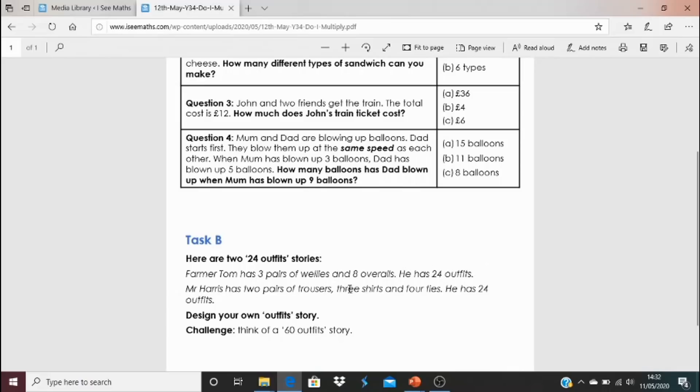There's another one, another 24 outfit story for Mr. Harris. Mr. Harris has two pairs of trousers, three shirts and four ties. He has 24 possible outfits. Now, your challenge is this. And I can't wait to see these. Design your own outfits story. Okay. Now, it could be if you want a challenge, you're going to think of a 60 outfits story. But you can make any number of outfits.